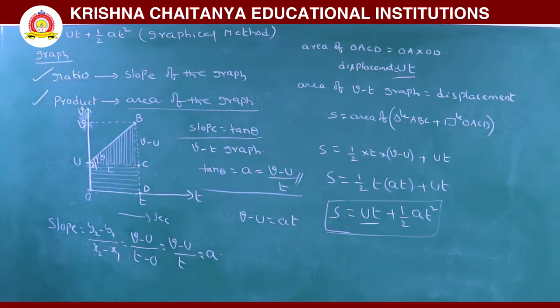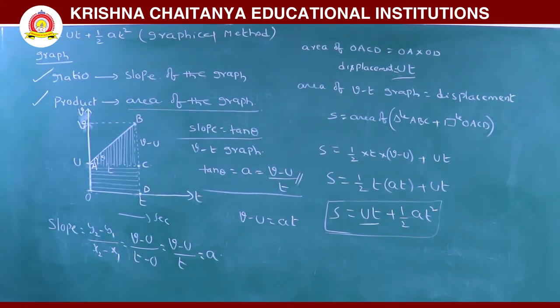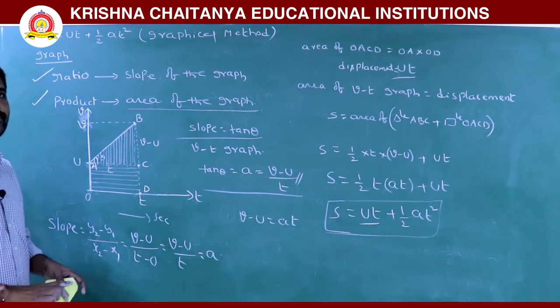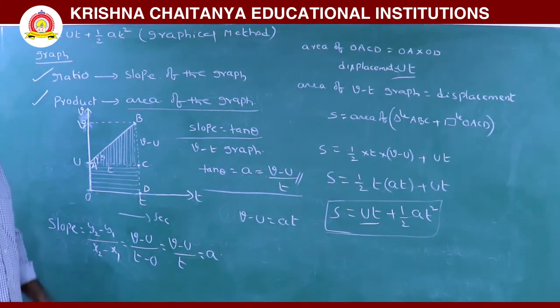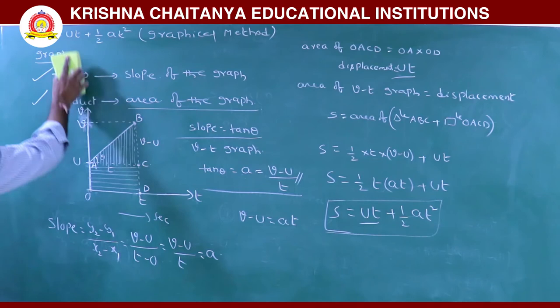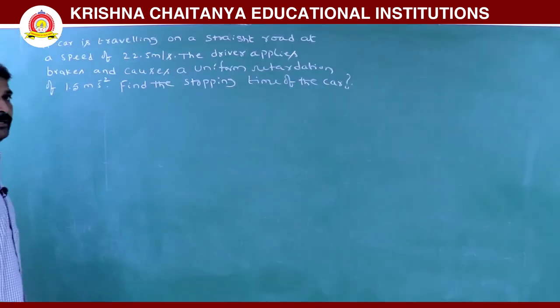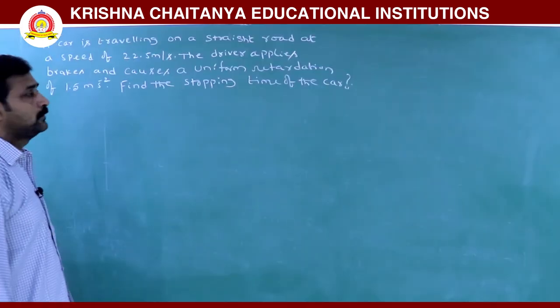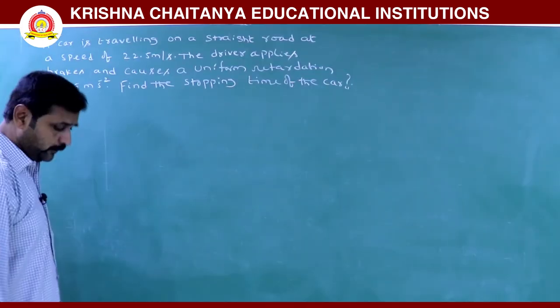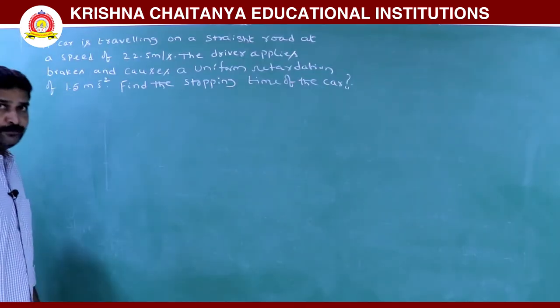So there are only two possibilities from any graph: ratio gives slope, and product gives area. This leads to integration methods which will be discussed later. Now we will solve problems.